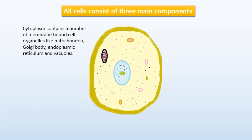Cytoplasm contains a number of membrane-bound cell organelles, like mitochondria, golgi body, endoplasmic reticulum and vesicles.